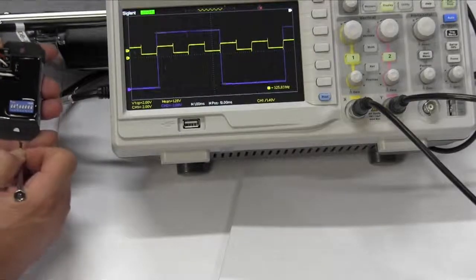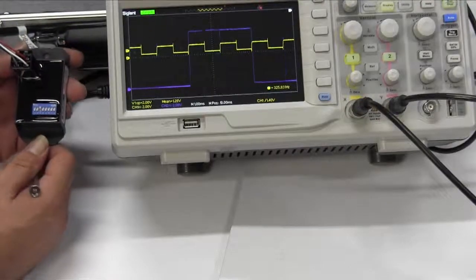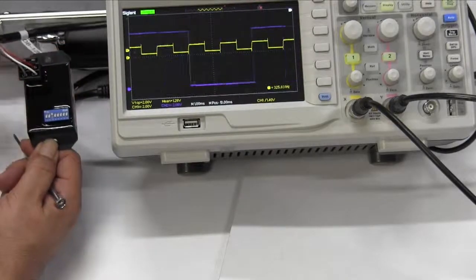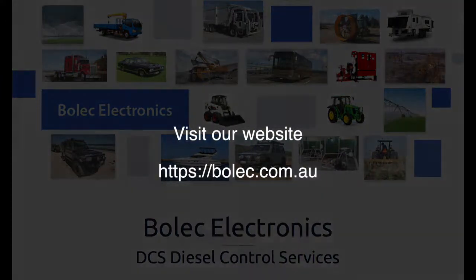The output of the DB1-128 can then be connected to the Bolec ERB205 electronic ratio box to further fine tune the frequency of the output signal. Contact Bolec Electronics for further information or visit our website.